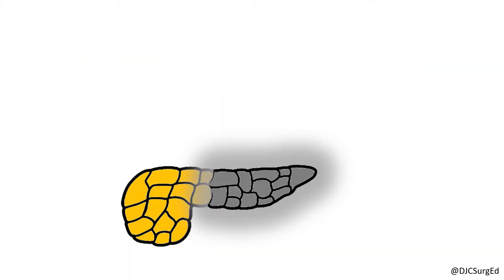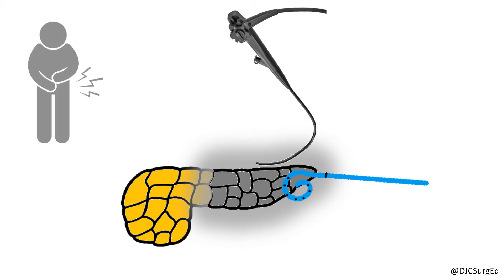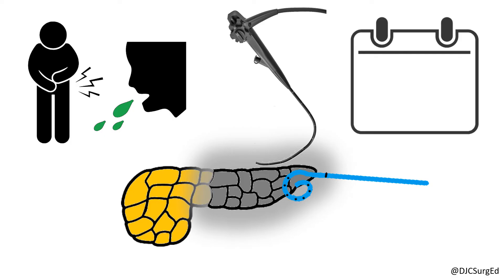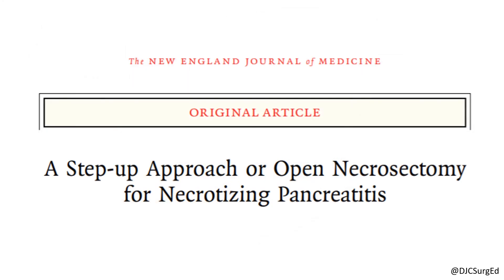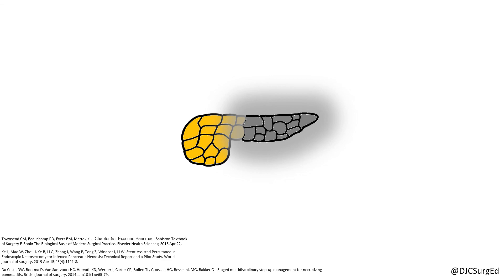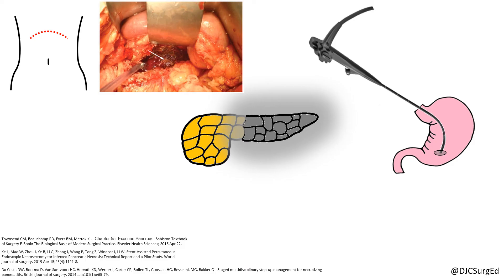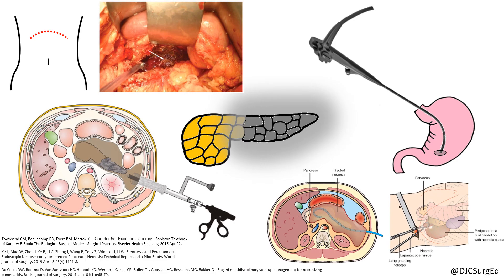Patients with infected necrosis that do not respond to initial percutaneous or endoscopic drainage, or patients with persistently symptomatic sterile necrosis, should be considered for pancreatic debridement, which should be delayed a minimum of four weeks to allow for encapsulation and demarcation. The step-up approach was popularized by the Dutch pancreatitis study group in 2010, demonstrating decreased complications and mortality compared to open necrosectomy. Options include open surgical necrosectomy, endoscopic debridement when transgastric access is available, and sinus tract endoscopy or video-assisted retroperitoneal debridement when retroperitoneal access is available.